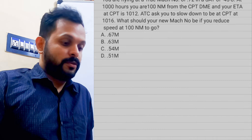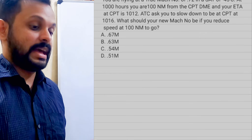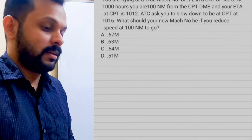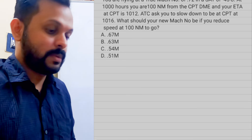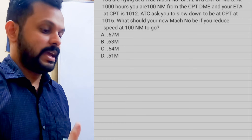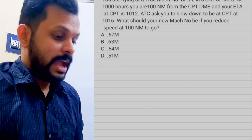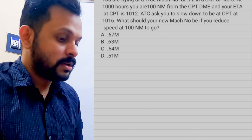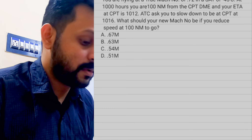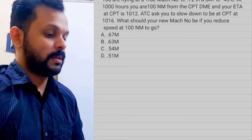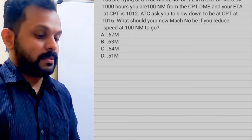Let's look at this question. You're flying at a true Mach number of 0.72 in a static air temperature of minus 45 degrees. At 1000 hours you are 100 nautical miles from the Charlie Papa Tango DME and your ETA at CPT DME is 1012. ATC asks you to slow down to be at CPT at 1016. What should your new Mach number be if you reduce speed at 100 nautical miles to go? There are four different options.